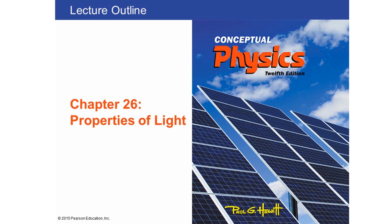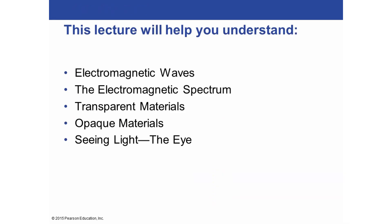Welcome back to week three. This week we are going to be covering chapter 26 on properties of light. Chapter 26 covers an introduction to light. We've covered sound so far, and sound and light are two different types of waves, so we're continuing with the theme of waves. This week we'll cover electromagnetic waves, what the electromagnetic spectrum is, transparent versus opaque materials, and how your eye sees light.